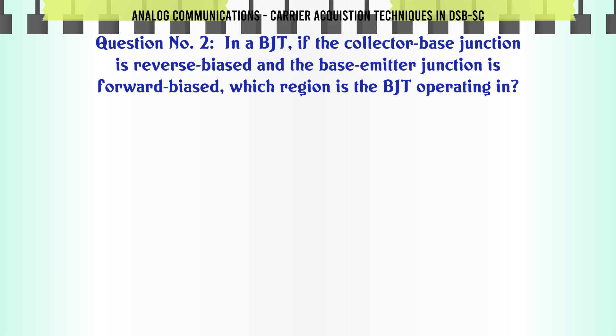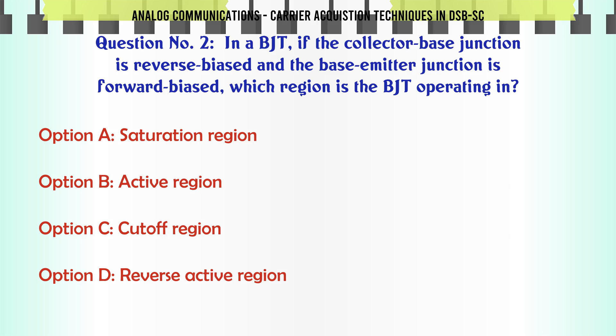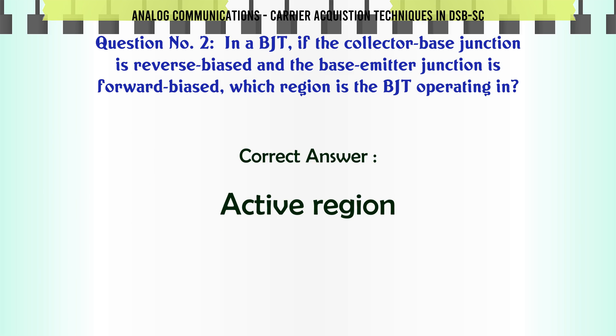In a BJT, if the collector-base junction is reverse biased and the base-emitter junction is forward biased, which region is the BJT operating in? A. Saturation region. B. Active region. C. Cutoff region. D. Reverse active region. The correct answer is Active region.